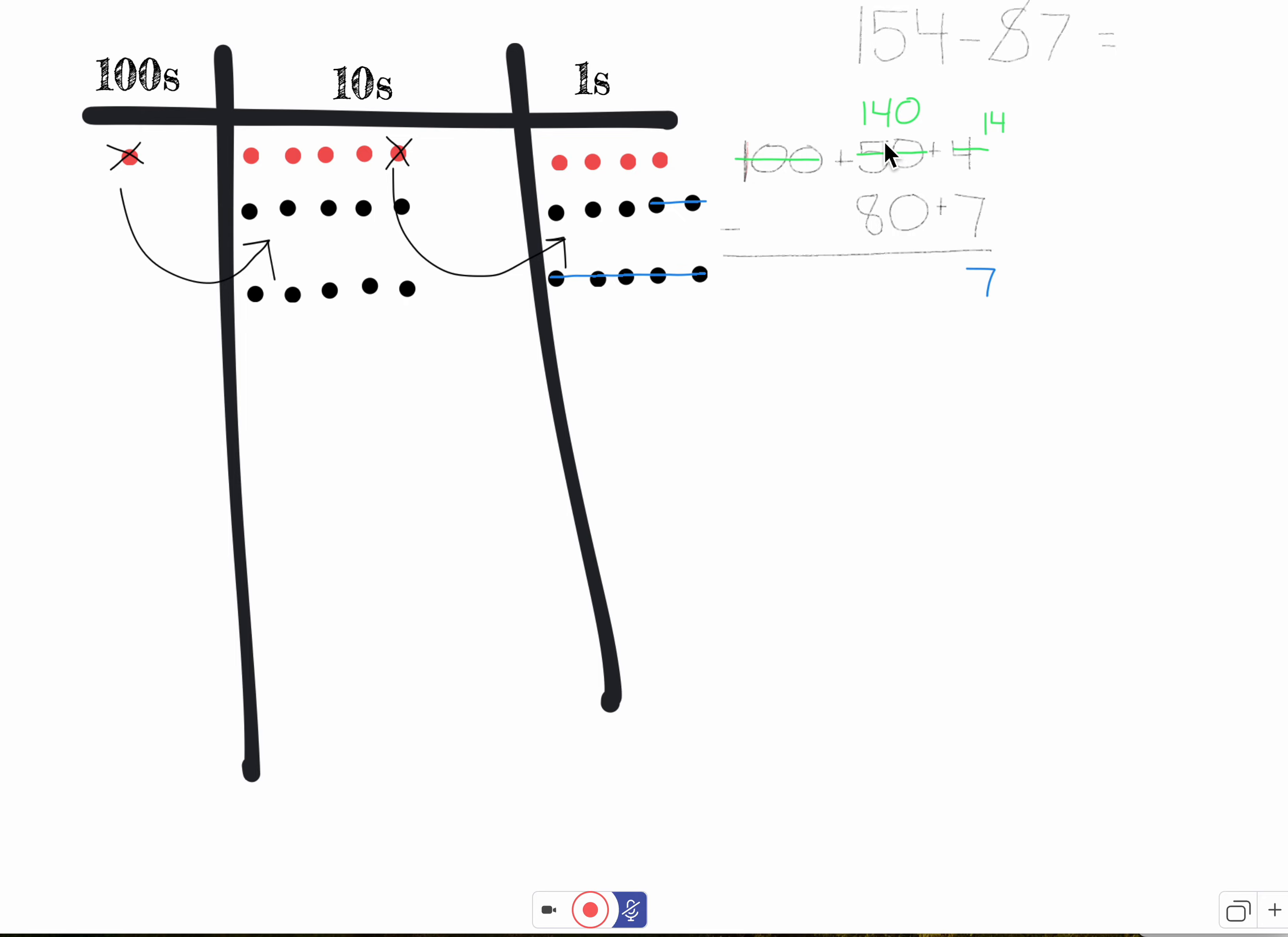Now I'm going to separate 80, or eight tens: ten, twenty, thirty, forty, fifty, sixty, seventy, eighty. Okay, I separated 80, and now I have one, two, three, four, five, six. Six tens. Six tens. That is sixty.